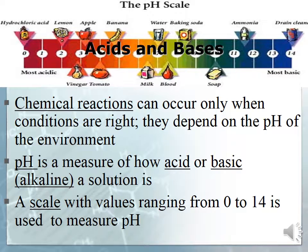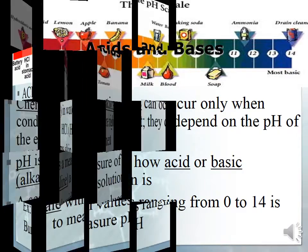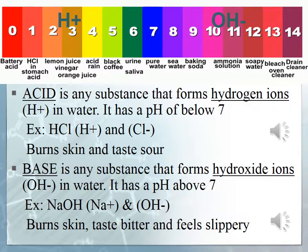Chemical reactions can occur when the conditions are right — they depend on the pH of the environment. pH is a measure of how acidic or basic (alkaline) a solution is. The scale ranges from 0 to 14. An acid is a substance that forms hydrogen ions, represented as H+. It has a pH below 7. An example is hydrochloric acid. Acids burn skin and taste sour.